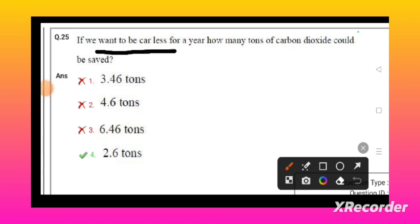If we want to be carless for one year, how many tons of carbon dioxide could be saved? Indirectly it's telling that if you are not using the car for one year, how much carbon dioxide is not going to be released. That is 2.6 tons of carbon dioxide we are going to save if you are not using the car.